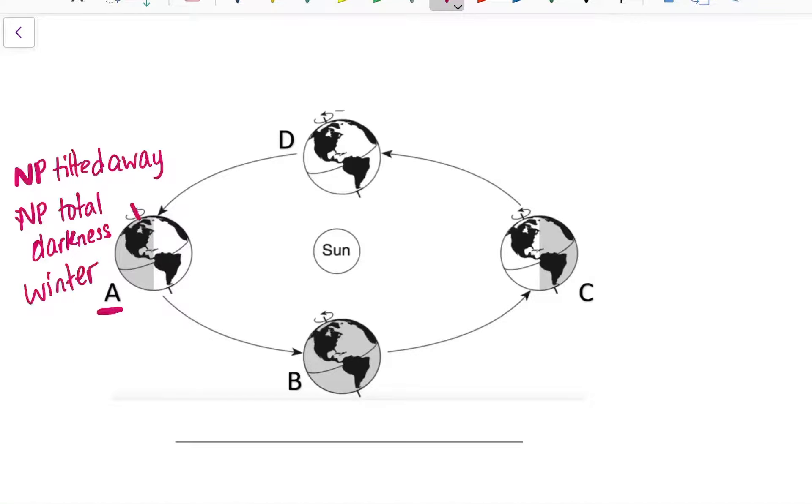If I go ahead and move across to position C, I can look again at the North Pole. This time I see that the North Pole is tilted toward the Sun. I can also see that the North Pole is in total daylight.